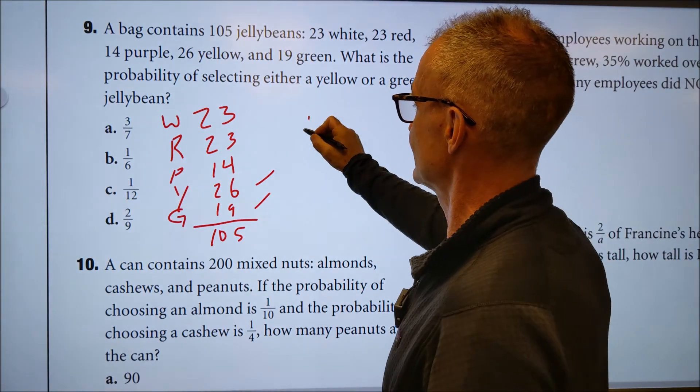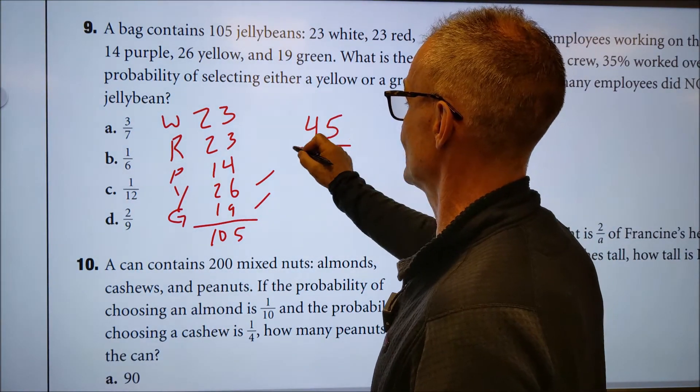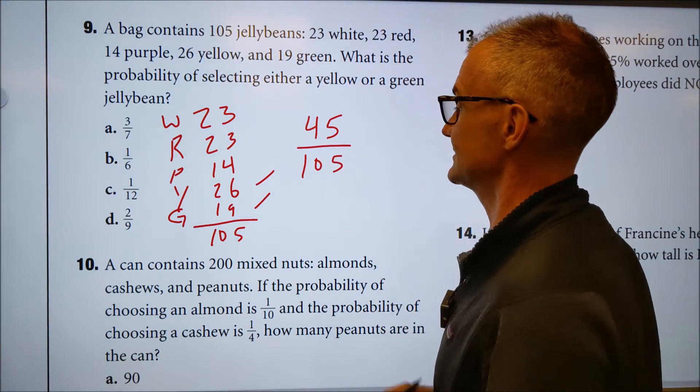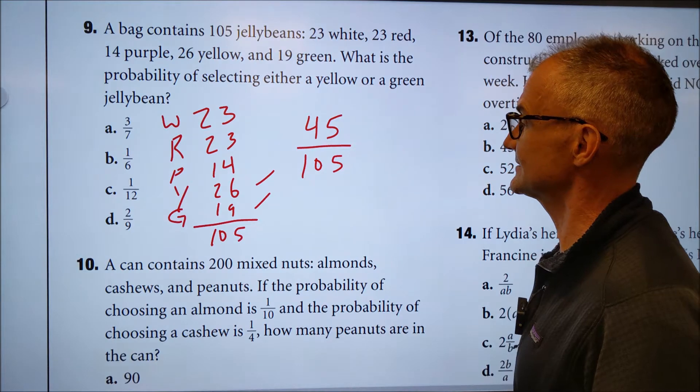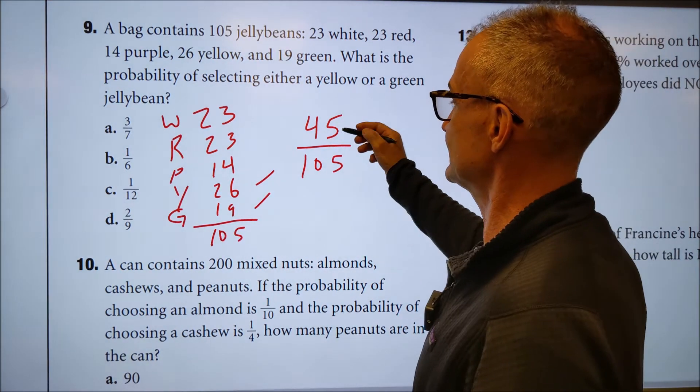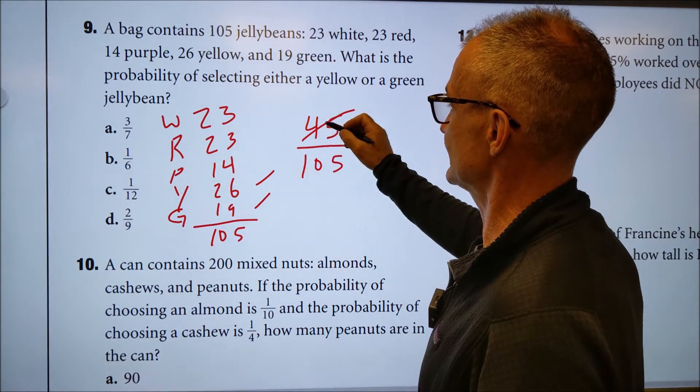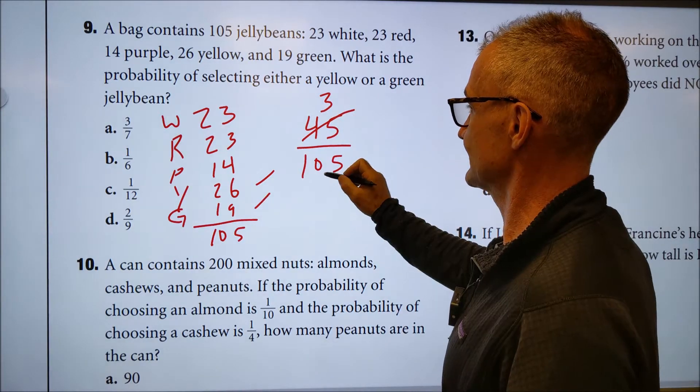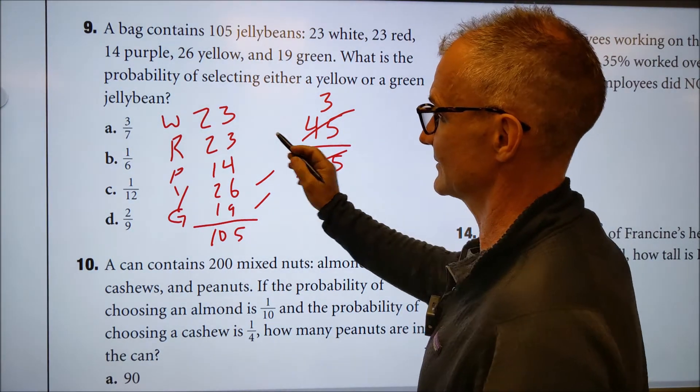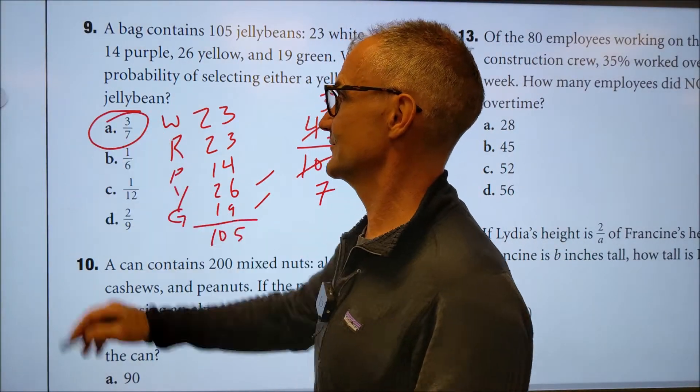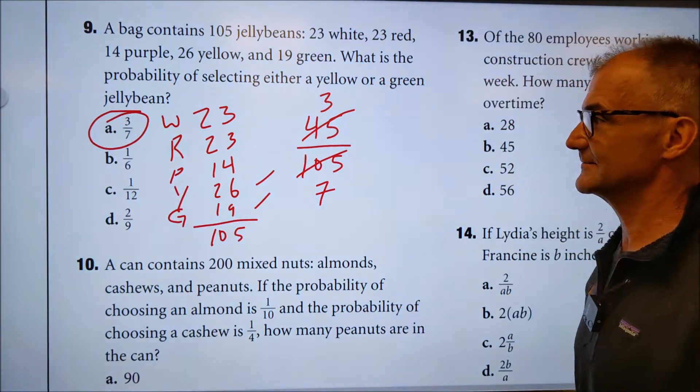30, 45, 45 out of 105 out of the total number of jelly beans. So I don't see that answer there. So I'm going to have to reduce that fraction. Let's see, 15 will go into both these numbers. 15 goes into here three times. Would that be? Yes. Seven times. So that's three sevenths. And I look over here and here's my answer. Three sevenths. There it is right there.